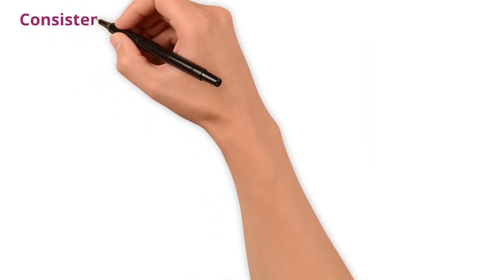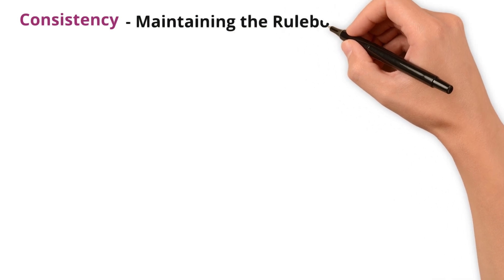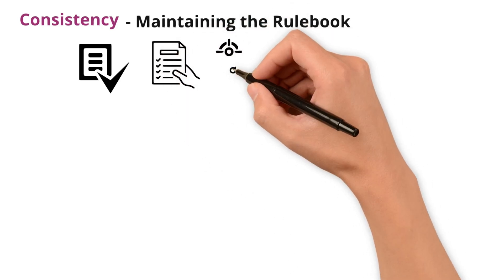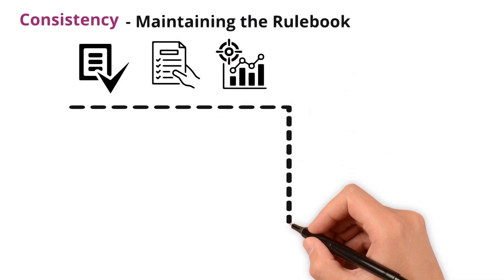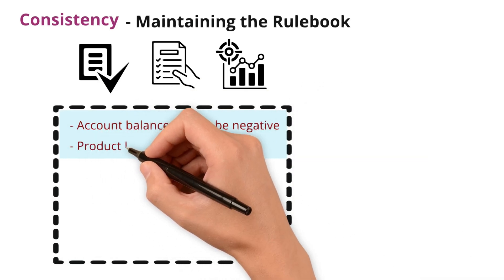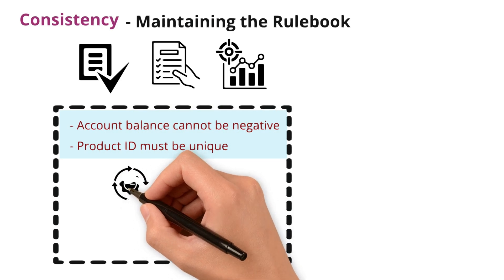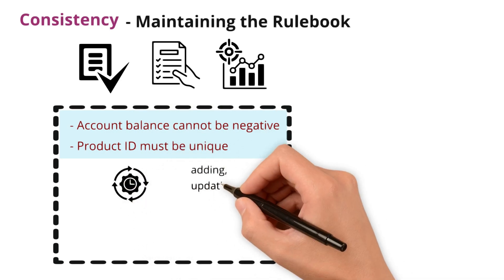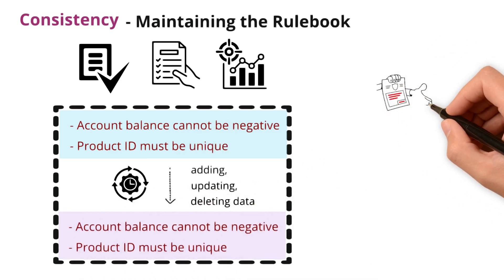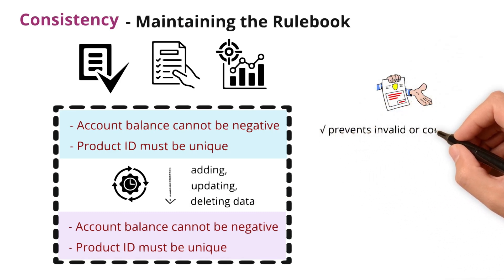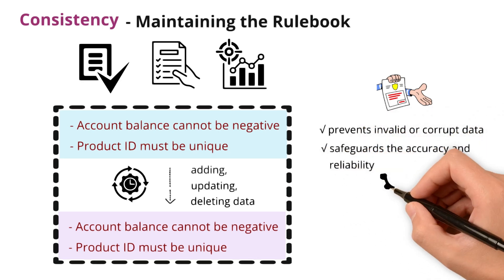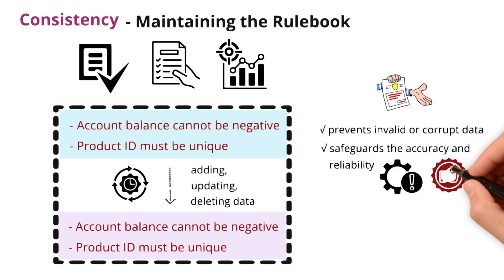Next is Consistency — it's like maintaining the rule book. It ensures that your data adheres to predefined rules, maintaining its accuracy and integrity. Imagine your database has rules like account balance cannot be negative, or product ID must be unique. Consistency ensures that after any transaction — adding, updating, or deleting data — the database still adheres to these defined rules, preventing invalid or corrupt data from entering the system, which safeguards the accuracy and reliability of your data.